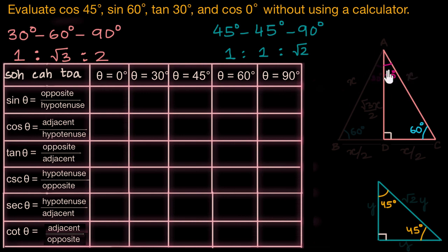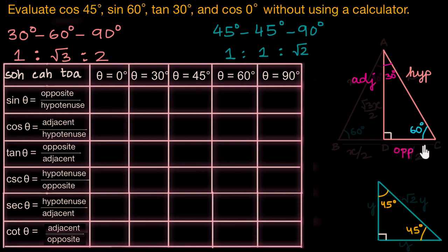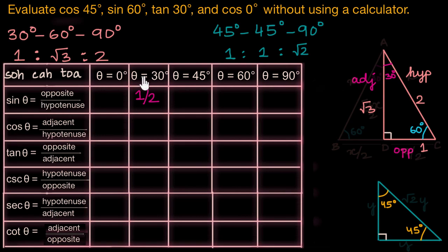So we have 30 degrees in this triangle. The side opposite to the right angle is always the hypotenuse, the longest side. With respect to 30 degrees, this side is our adjacent side, and the side opposite to 30 degrees is the opposite side. The ratio of these sides is 1 : √3 : 2. Sine of any angle is opposite over hypotenuse, so if the opposite side is 1 unit and the hypotenuse is 2 units, sine 30 degrees is 1/2.